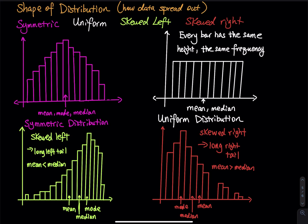For skew left, imagine a hundred people took a test and most people got a very high score. The tall mountain on the right represents the high scores with high frequency. However, a small group of people got a very low score, shown as short bars on the left. Those low scores pull the mean down because they lower the sum, which gives a smaller mean.